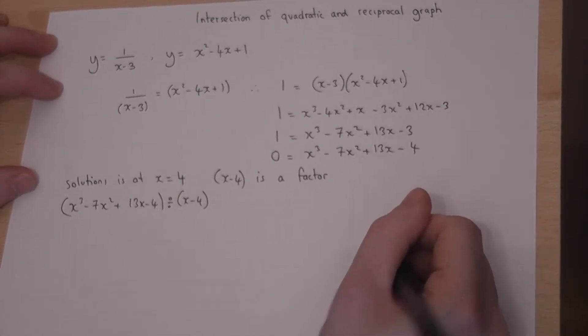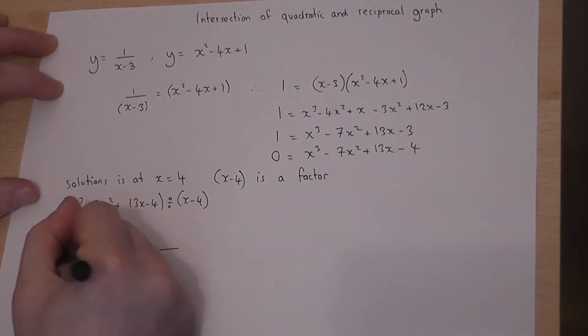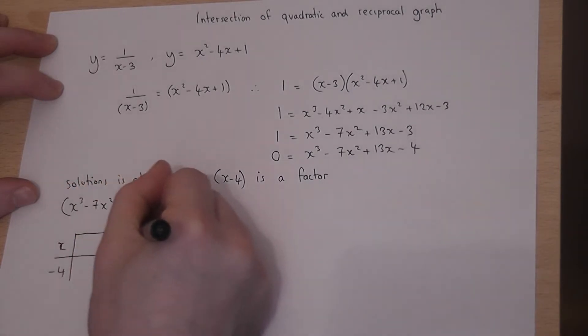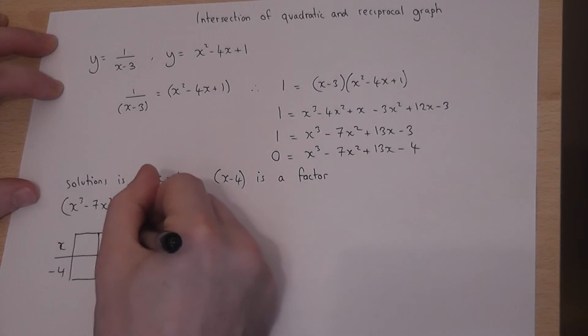Now for this I use a grid method. So I put my factor of x and minus 4 down the left hand side and then work through as follows.